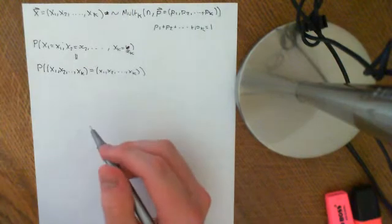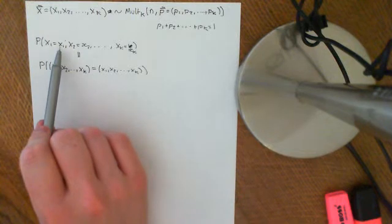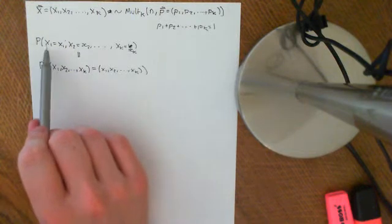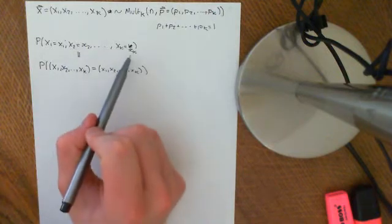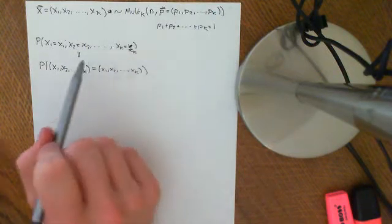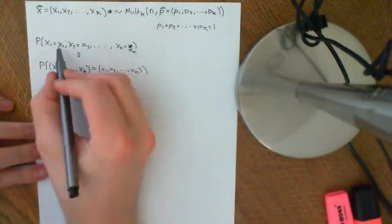Okay, but basically it means the identical thing, we want the probability that you throw little x1 balls into basket 1, little x2 balls into basket 2, little xk balls into basket k, etc, and of course, all of those numbers should add up to n.